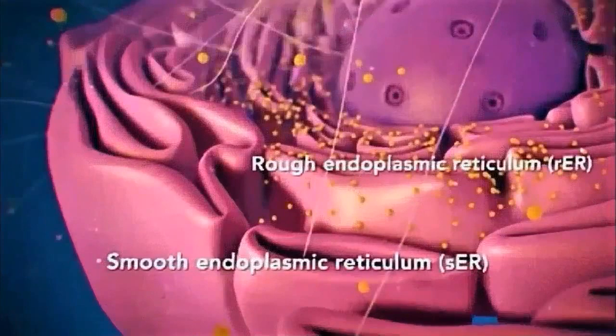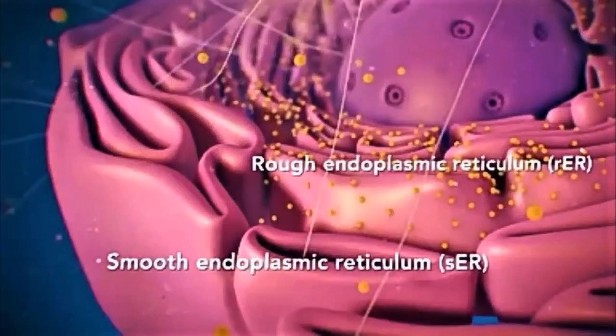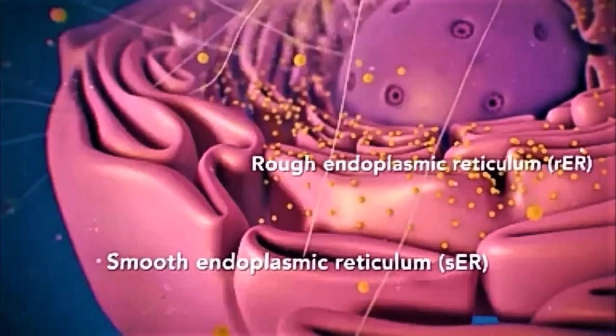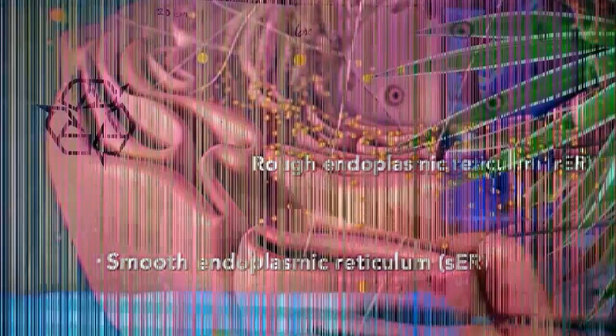Next, we have the endoplasmic reticulum. There are two types of endoplasmic reticulum, the rough ER and the smooth ER. The rough ER has ribosomes attached to it, therefore it is called rough, while the smooth ER don't. The endoplasmic reticulum is a membrane-enclosed passageway for transporting materials such as the protein synthesized by ribosomes.